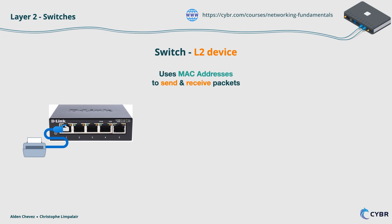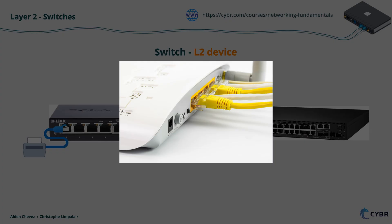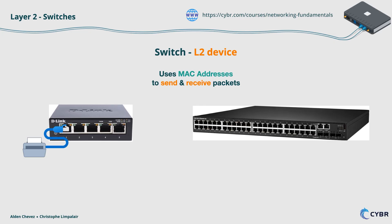There are a number of different switches in many different sizes, and you can usually visually identify switches by the number of ports that they have. Routers, which we'll discuss in the next chapter, typically have fewer ports — maybe somewhere between two to four — while switches, on the other hand, usually have at least four to eight ports, all the way to 48 ports.